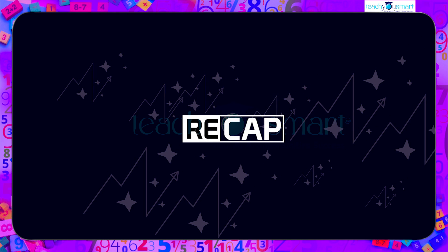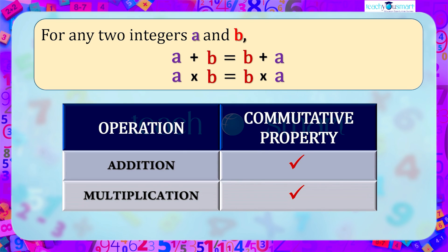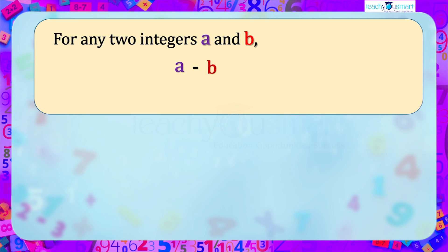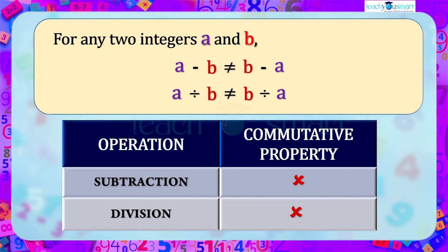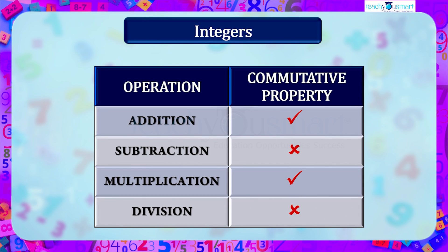Let's recall what we discussed today. For any two integers a and b: a plus b equals b plus a, and a multiplied by b equals b multiplied by a. Also, a minus b is not equal to b minus a, and a divided by b is not equal to b divided by a. Hence, for integers, addition and multiplication are commutative, while subtraction and division are not commutative.